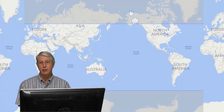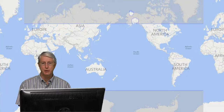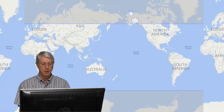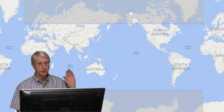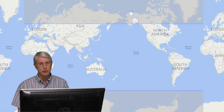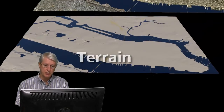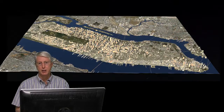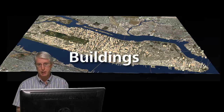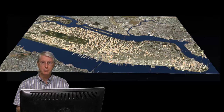Now let's consider how you can acquire the terrain data, the photo imagery and so on that you need for your map. The easiest way to create a model is to use the Model Builder Preview, which can automatically generate a model anywhere within the coverage area shown on this map, which as you can see is almost everywhere. Of course if you understand something about different kinds of geospatial data, you can collect it yourself either by searching the web for free data from government or local websites, or by contracting with a data provider to capture exactly the data you want.